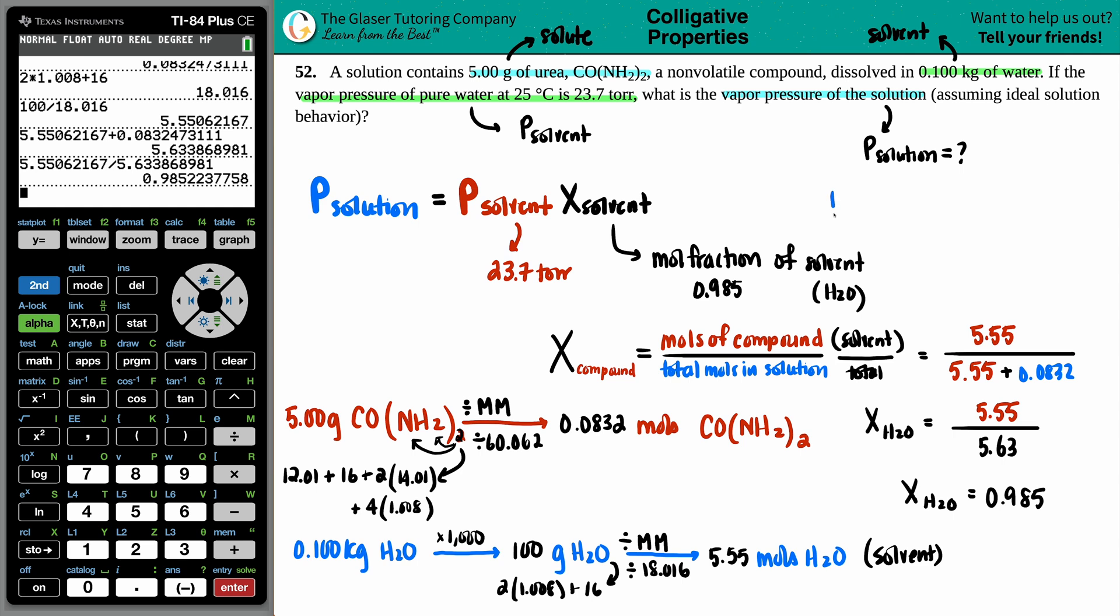So finally, we can say the pressure of the solution equals the pressure of the solvent, which is the 23.7. And I'm just going to multiply that by the mole fraction that I found, 0.985. And then we can find the pressure of the solution, which would be equal to, let's see, 23.7 times that number. And there we go. Let's do, how many sig figs? I guess three? 23.3.